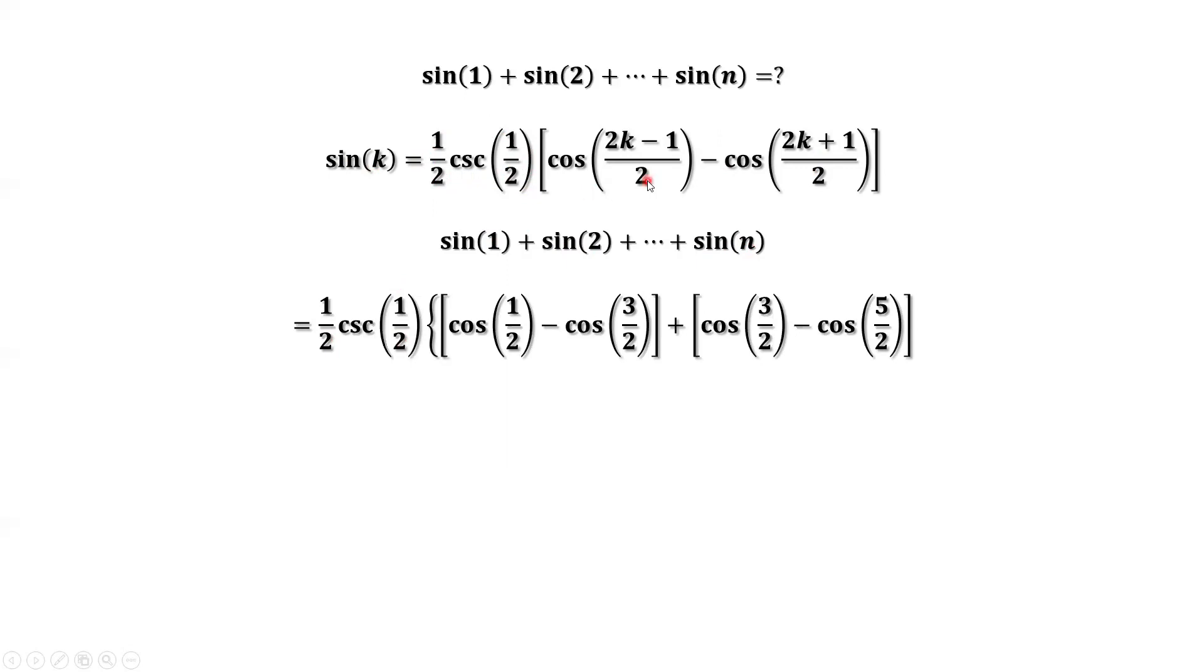The inside part, k starts from one. Two times one, that's two. Two minus one is one. That's one half. Here is two halves. That's cosine of three halves minus cosine of five halves. Continue to work out all the terms. We have this.